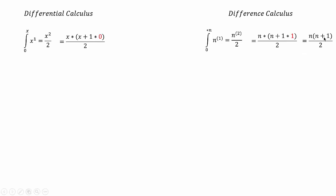This equals n times (n+1) by 2. If we write this integral in general notation, this integration from 0 to n is nothing but the summation from 0 to n. We have already established that n with parenthesis 1 equals n, and this result is n(n+1)/2. So we got the first relation very easily.